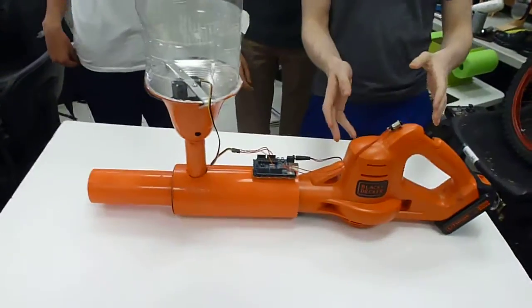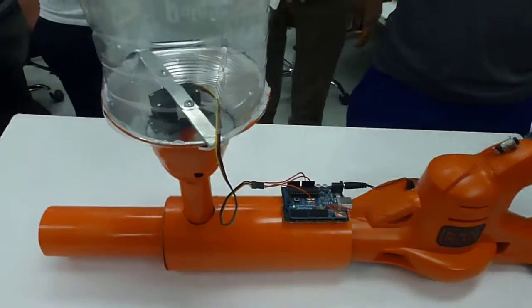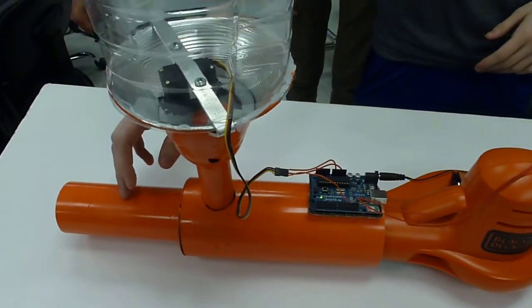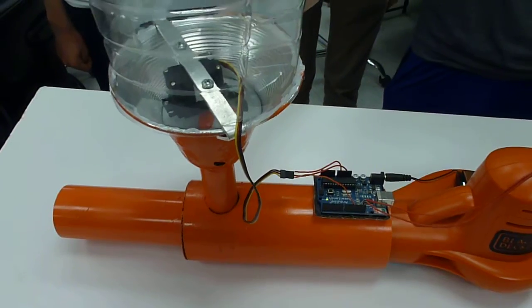It is an attachment for a normal leaf blower motor, and we made it out of essentially a 3-inch PVC pipe, a 2-inch PVC pipe, a 1-inch PVC pipe, a funnel, and an Arduino.